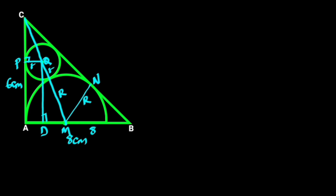So, MB equals 8 minus r, AD is the same as the radius of the circle, and DM is the radius of the semicircle minus the radius of the circle. In triangle ABC, we will use Pythagoras' theorem to find BC. From Pythagoras' theorem, BC² equals AB² plus AC².